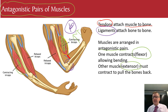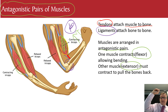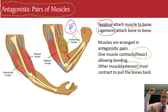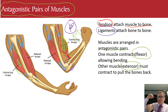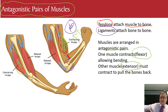To summarise the antagonistic pair: to lift my arm up, the bicep contracts. To pull my arm back down again, the tricep underneath contracts. They work in opposite pairs.